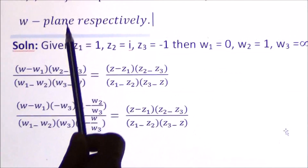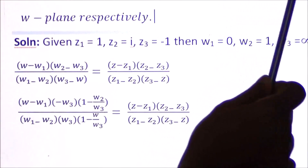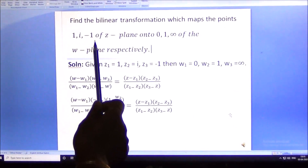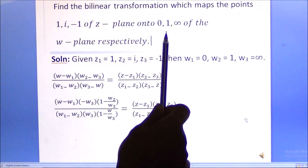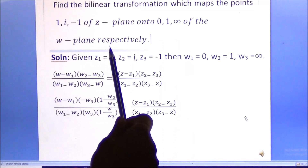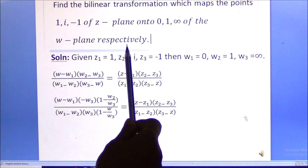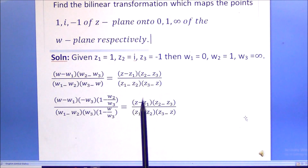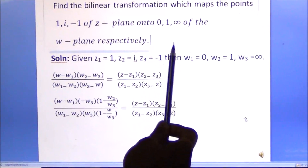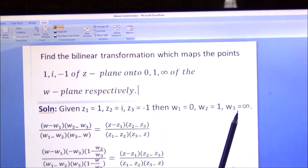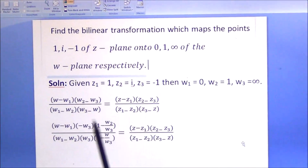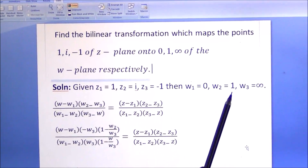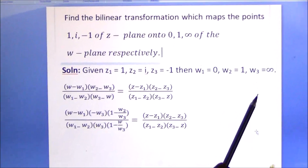Second problem: Find the bilinear transformation which maps the points 1, i, -1 of the Z-plane onto 0, 1, infinity of the W-plane respectively. The difference from the previous problem is that one of the W values is infinity.